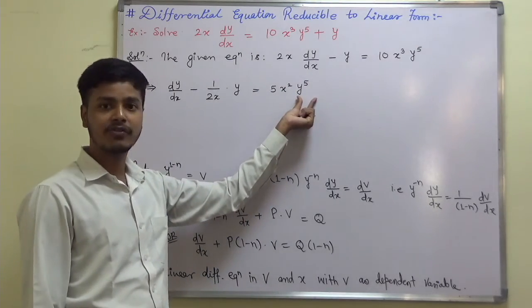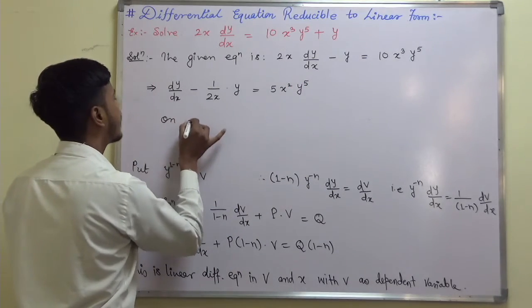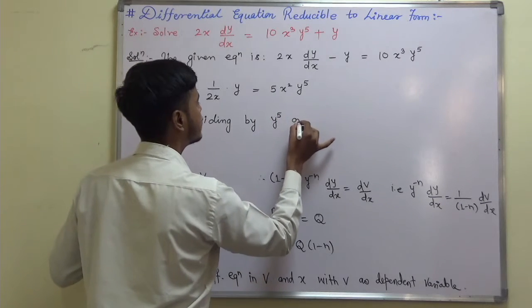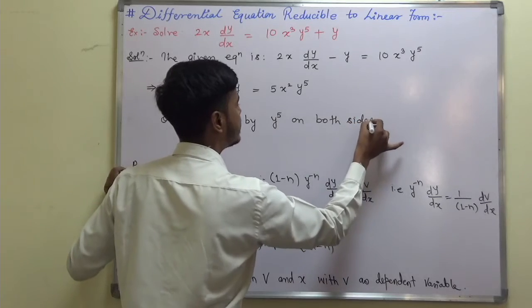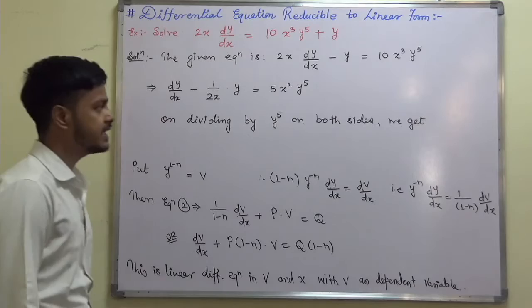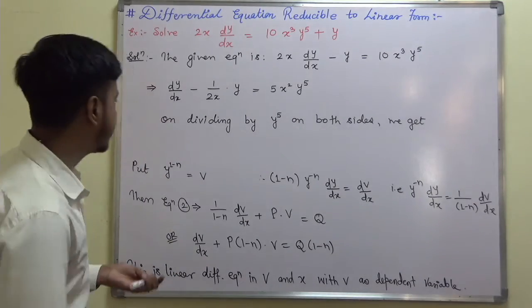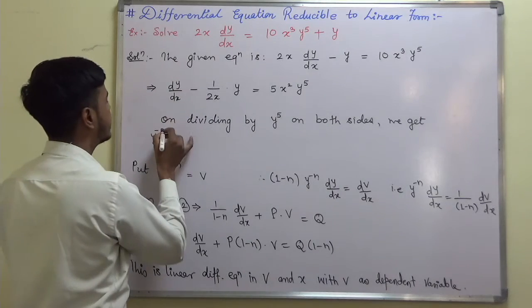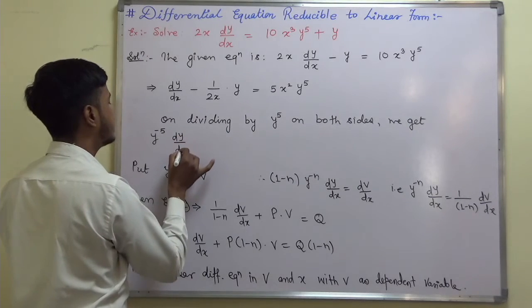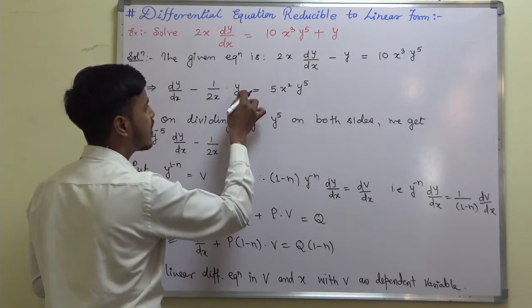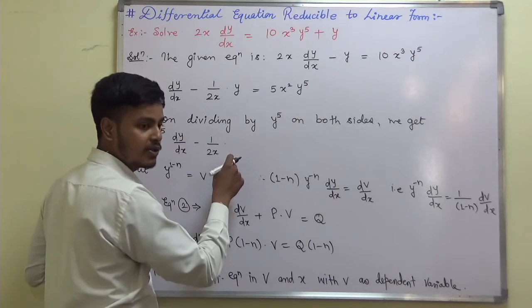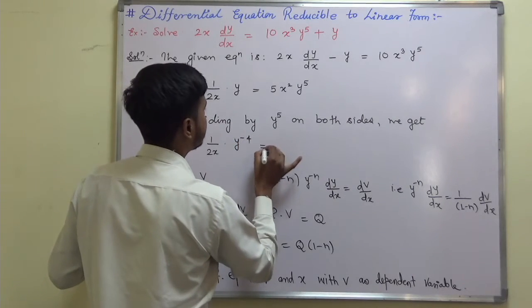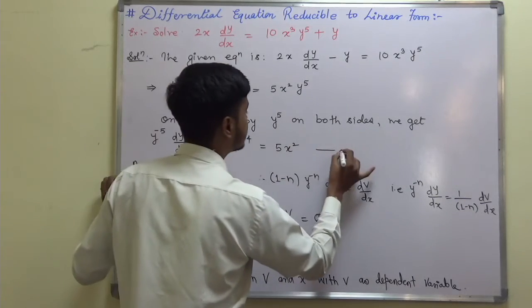Since there is a y^5 term, divide both sides by y^5. We get y^(−5)·dy/dx − (1/2x)·y^(−4) = 5x². This is equation 2.